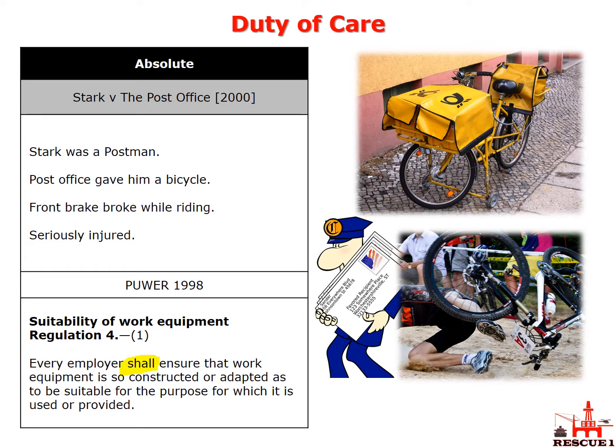So Stark was a postman and the Post Office gave him a bicycle. While he was riding, the front brake broke and he went head over heels over the handlebars and was seriously injured. Under the Provision and Use of Work Equipment Regulations, it states every employer shall ensure that work equipment is so constructed or adapted as to be suitable for the purpose for which it is used or provided. The court found this was an absolute duty and the Post Office had not fulfilled it, and therefore ruled in favor of Stark.